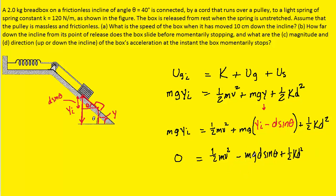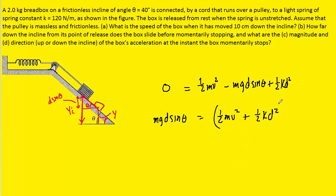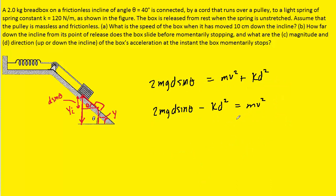We could then add the mgd sine theta over to the left side. Multiply both sides of the equation by 2, and when we distribute the 2 to both terms on the right, it's going to cancel out the 1 halves. Let's subtract kd squared over to the left. Divide both sides by the mass m. Then finally to isolate v, we can take the square root of both sides.